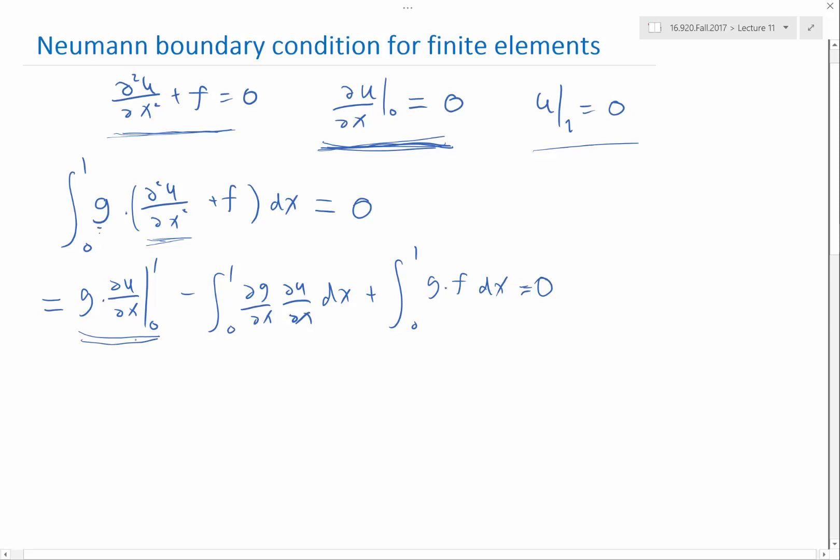right? So it disappears on the 0 side and on the 1 side because my test function g satisfies the Dirichlet boundary condition. This also disappears.